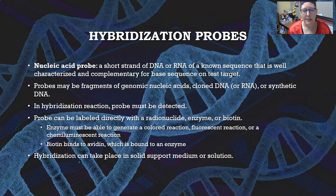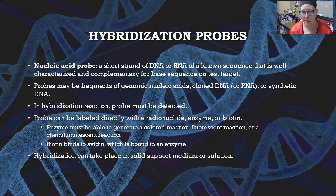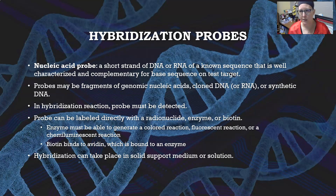In a hybridization reaction, the probe is what is detected, and we detect it by labeling the probe. It can be labeled directly with a radionuclide, an enzyme, or biotin. The enzyme must generate a colored, fluorescent, or chemiluminescent reaction. Biotin binds to avidin, which is usually bound to an enzyme that similarly generates a color, fluorescent, or chemiluminescent reaction.